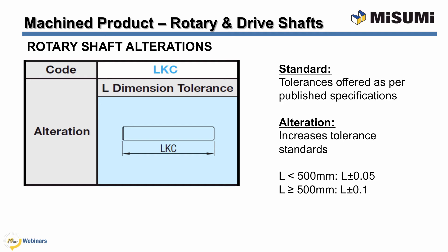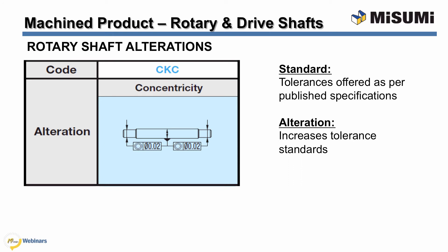From the accuracy standards portion of the presentation, Misumi offers length tolerances ranging from plus or minus 0.1 to plus or minus 0.8 millimeters depending on the length selected. An alteration improves the length tolerance to plus or minus 0.05 millimeters for shafts less than 500 millimeters and plus or minus 0.1 millimeters for shafts equal to or greater than 500 millimeters. The standard concentricity tolerance is 0.06 for rotary shafts, and an alteration will improve this to 0.02, ideal for high speed applications.